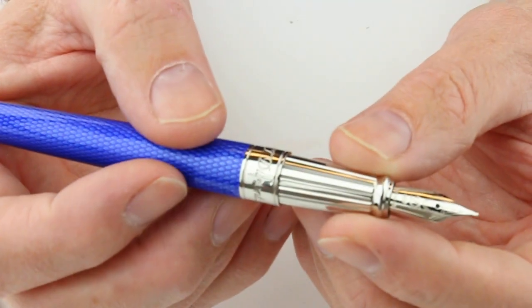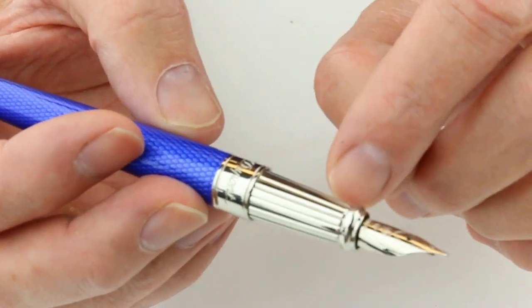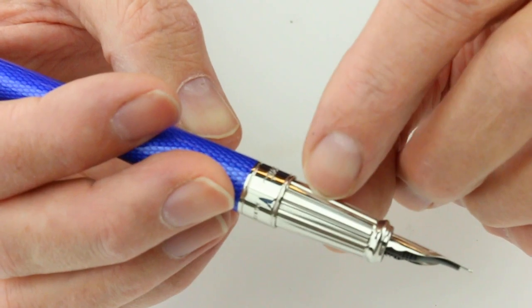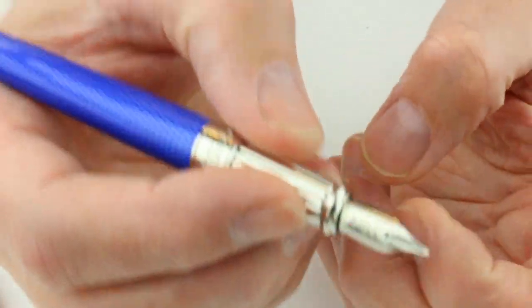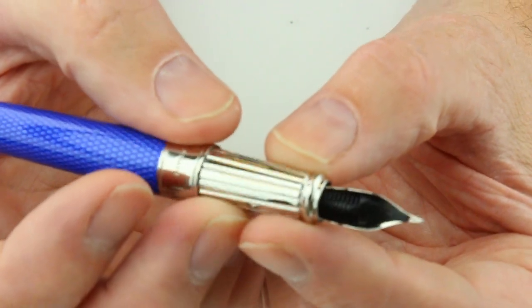It has a matching section that matches the rest of the trim on the pen. There are some vertical lines or grooves in the section that allow you to grip the pen with a matching 14 karat gold nib.